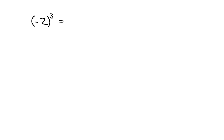Let's do a brief reminder of exponents. Say we have something like negative 2 to the power of 3. Remember, negative 2 is what we call the base, and 3 is the exponent. What this means is we must take that base, negative 2, and multiply it together 3 times because the exponent is 3. So we've got negative 2 times negative 2 times negative 2.